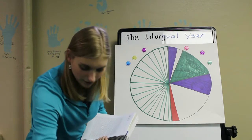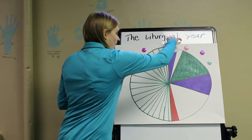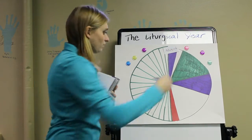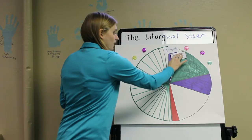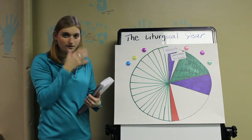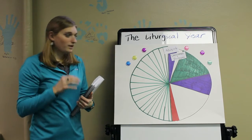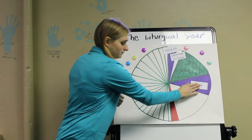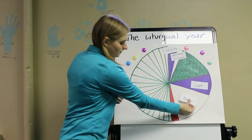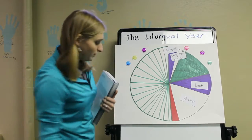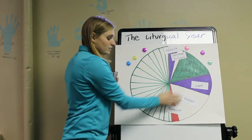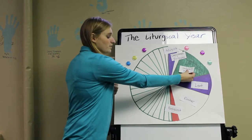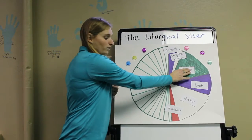There is the season of Advent — the purple here — and the season of Christmas and Epiphany, and those make up the Christmas cycle. Then there's the Easter cycle of Lent, Easter, and Pentecost. Both of these cycles are divided by periods of ordinary time.